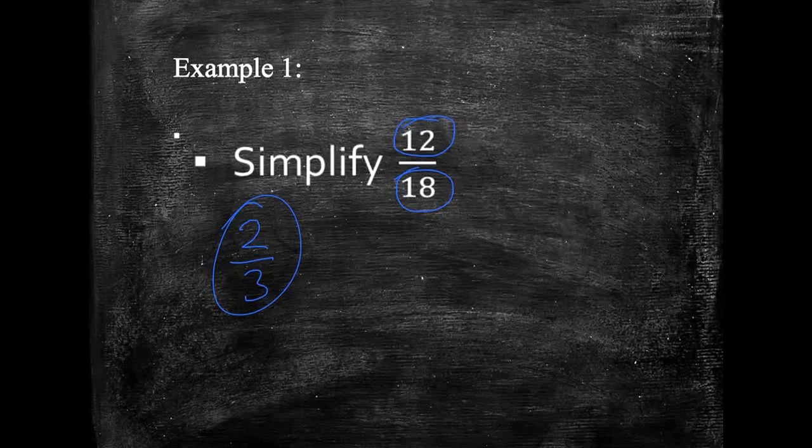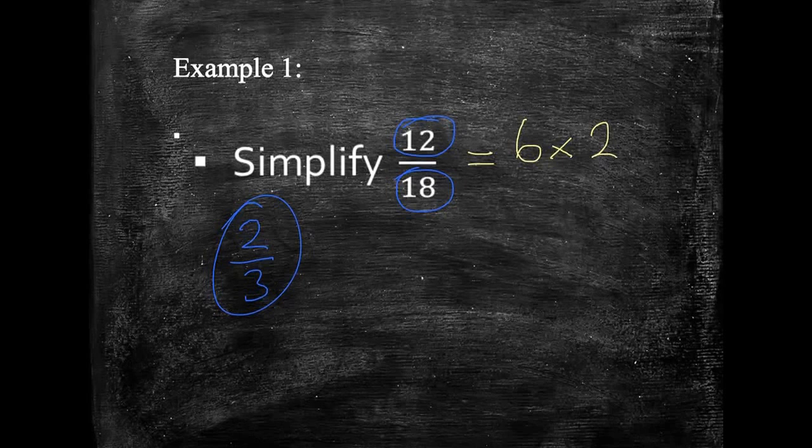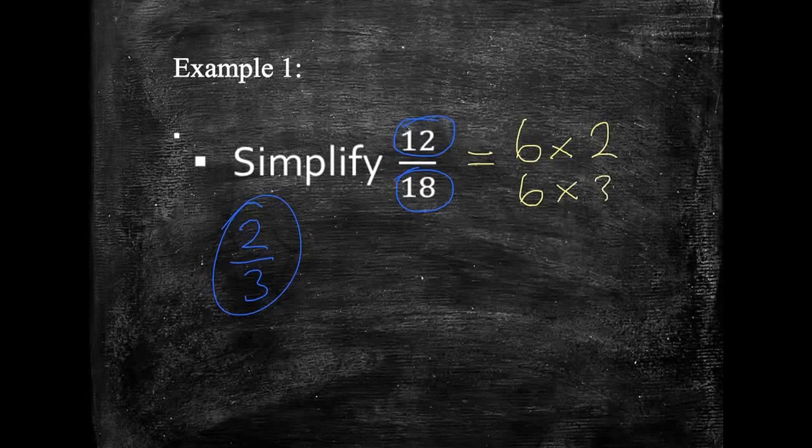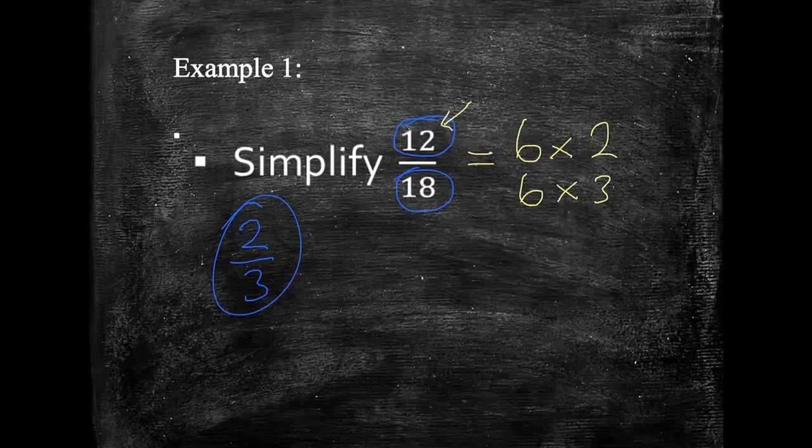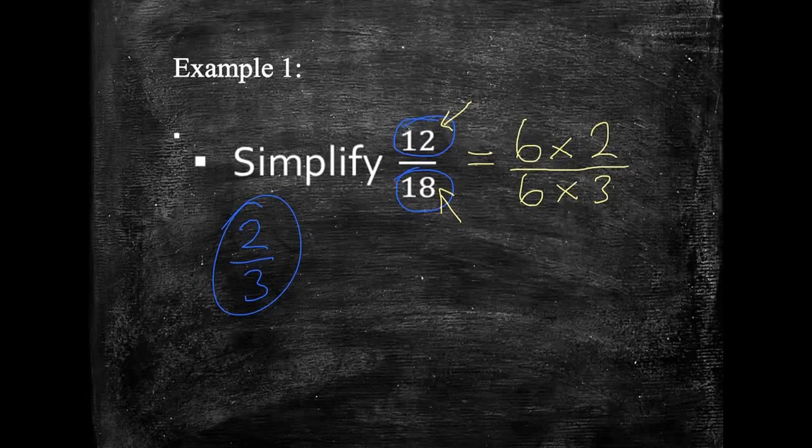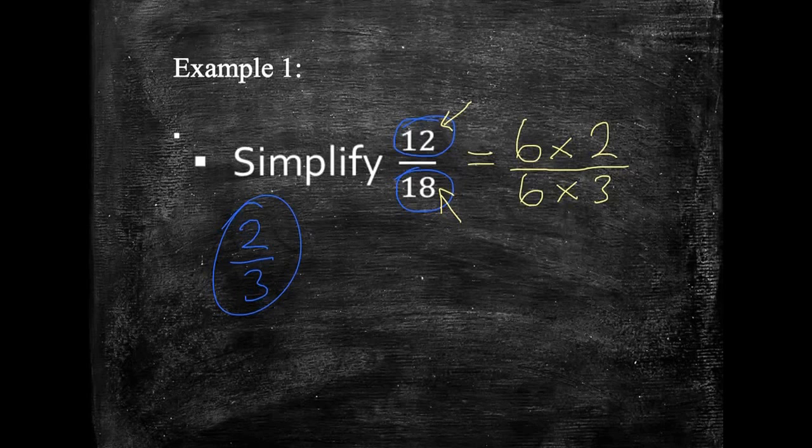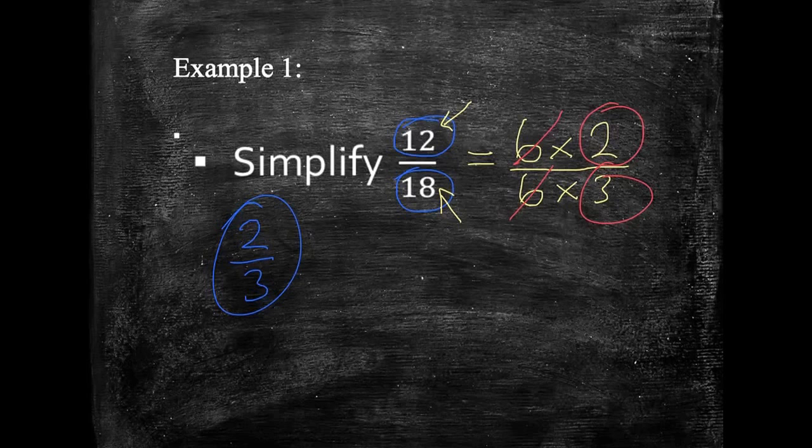Let's just think about where that comes from though. So, 12 can be rewritten as 6 multiplied by 2. And 18 can be rewritten as 6 multiplied by 3. In effect, what we're doing is taking a common factor of 6 out of both 12 and out of 18. And if I rewrite this as a fraction like this, we can see that the 2 thirds, we can almost see now where the 2 thirds has come from. It's here. But why can we just cross out these two sixes?